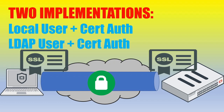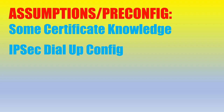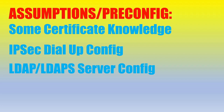In this video, we will go over two different implementations for certificate authentication with a FortiGate firewall and FortiClient using IPSec. It will help to have some certificate knowledge, such as understanding private keys, public keys, certificate authorities, and the signing process. I'm going to have a pre-configured IPSec dial-up configuration already using a pre-shared key, and a pre-configured LDAP server on the FortiGate. I've linked some suggested videos in case you need a refresher on any of these items.